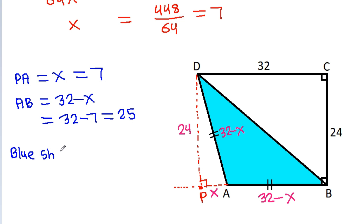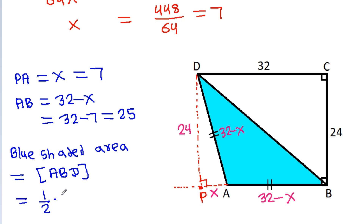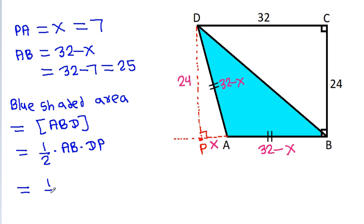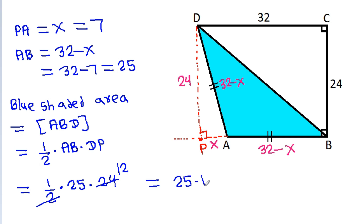The blue shaded area equals the area of triangle ABD, which is one half times AB times DP. That is one half times 25 times 24, and since 2 times 12 is 24, this gives 25 times 12, which equals 300.